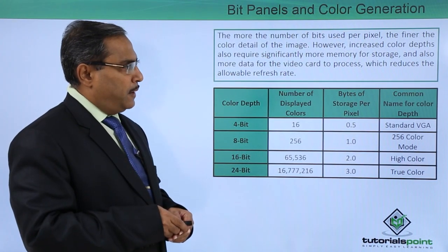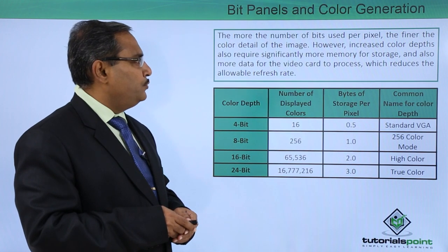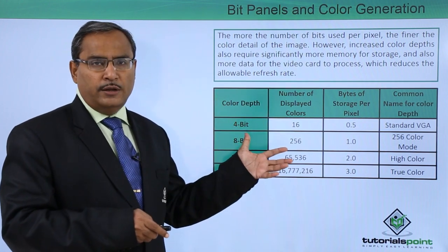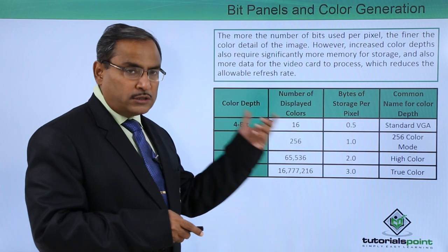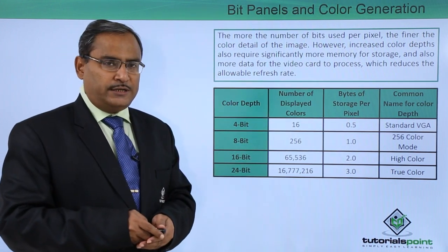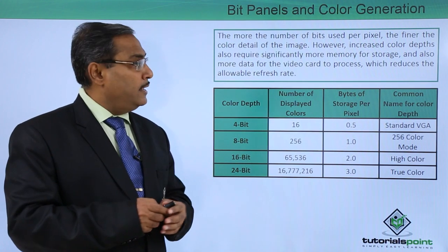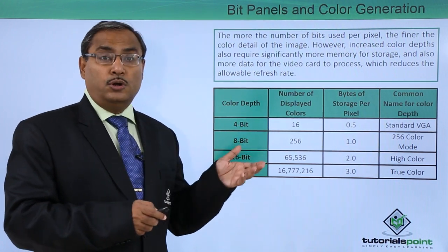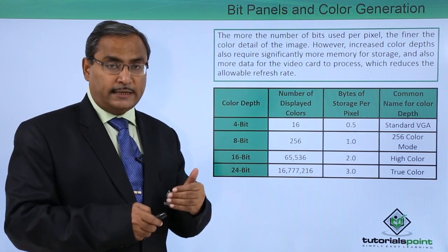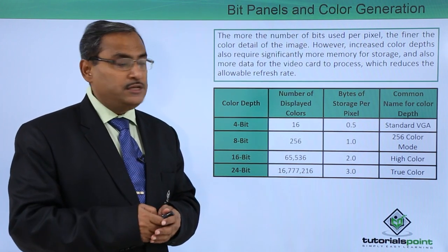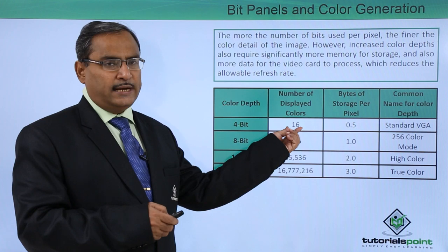The more the number of bits used per pixel, the finer the color detail of the image. However, increased color depth also requires significantly more memory to store that information, and more data for the video card to process, which reduces the allowable refresh rate. If you want more color levels, the number of bits per pixel will be high, the video card will need to process a huge number of bits, and the refresh rate will decrease — which can lead to deterioration of the image display. For a color depth of 4 bits, 2 to the power of 4 gives 16 colors.